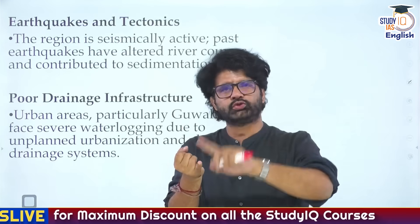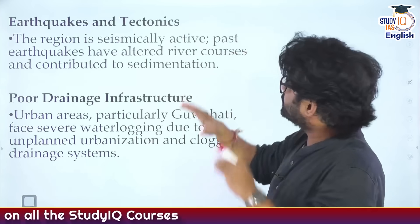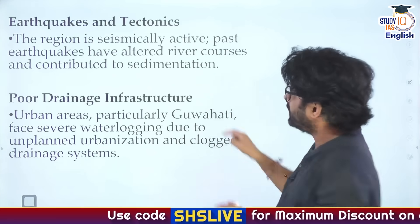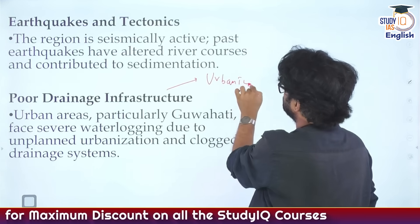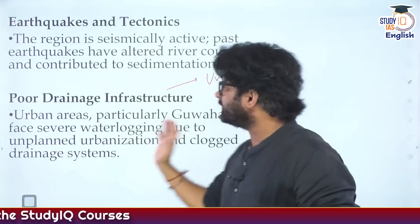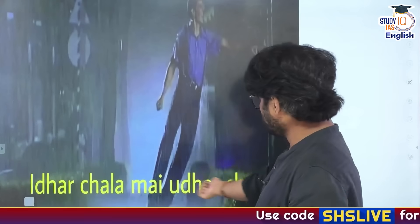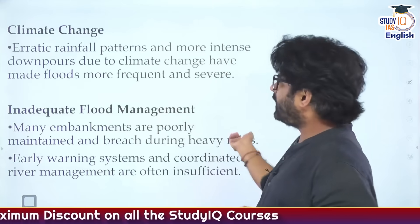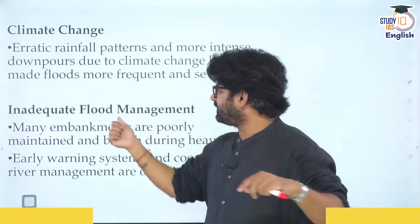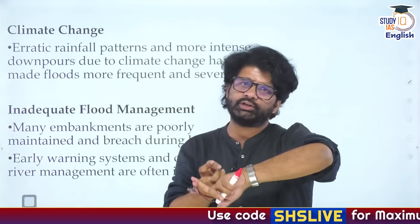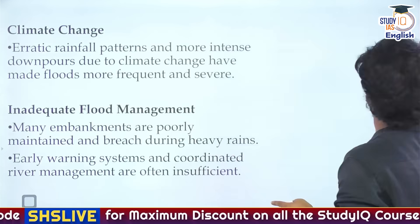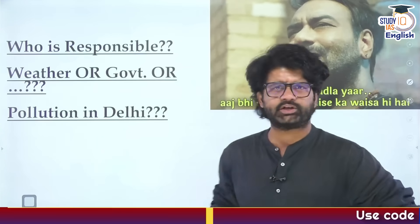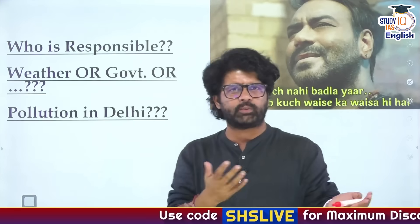To summarize: the middle stage of Brahmaputra, monsoon rainfall, the unpredictable nature of Brahmaputra due to this seismically active region, poor drainage infrastructure, haphazard urbanization - these are factors in GS Mains Paper 1 on urbanization. Climate change and erratic rainfall patterns, inadequate flood management - these are also contributing factors. So there are multiple factors, some natural and some man-made. The question is: who is responsible - nature, government, both, or neither?